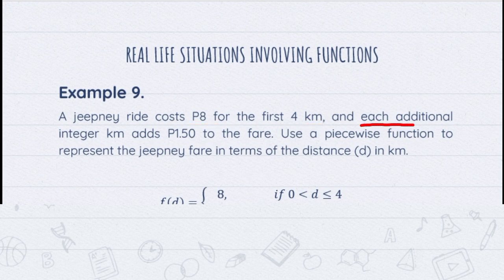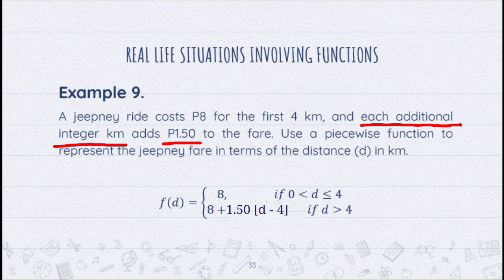For the second sentence, for every additional integer kilometer it charges an additional 1.50 fare. So our second function is F of D equals 8 plus 1.5 times the floor function of (D minus 4), if D is greater than 4. We use the floor function here because it gives the nearest integer rounding down. For example, if we exceed 0.5 kilometer, the floor of 0.5 is still zero, meaning we won't be charged 1.50, since the problem states every additional integer kilometer.